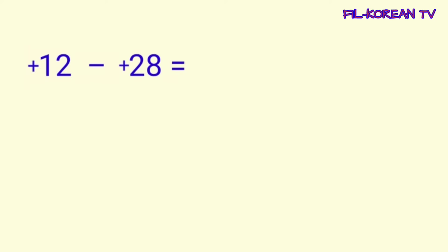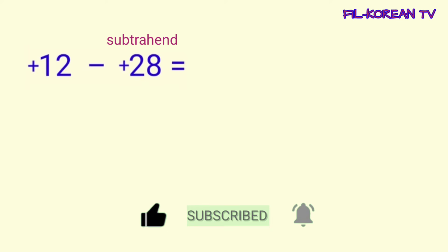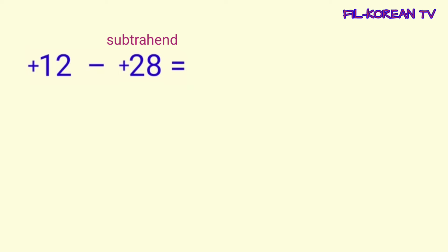Next example: positive 12 minus positive 28. Sagutin natin ito step by step. Itong subtrahend na positive 28, papalitan natin ang sign. Positive siya, magiging negative — negative 28.